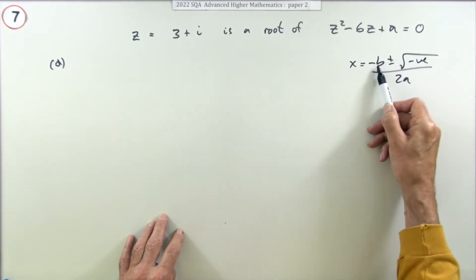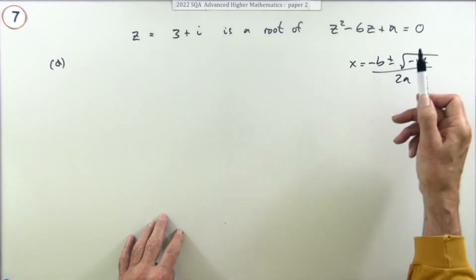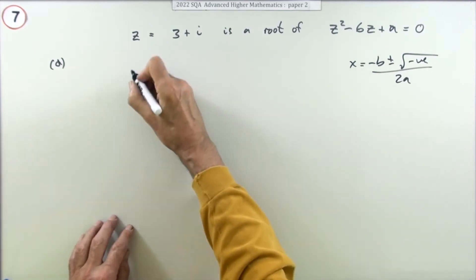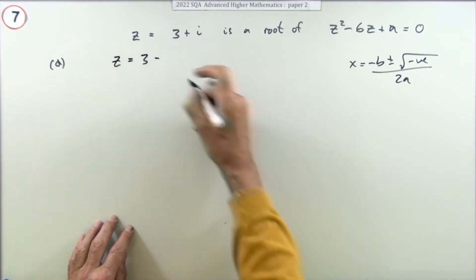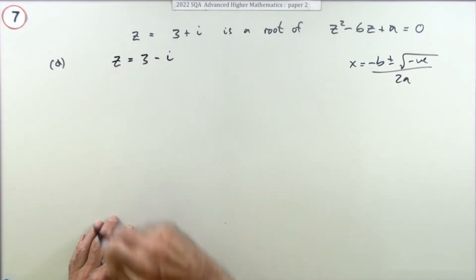It'll just be one will be the real part plus i, it'll be the real part minus i. That's the conjugate pair, so you can simply state it straight away. If that's one root, the other root will be three with the minus, it'll be 3 minus i, and there's your mark.